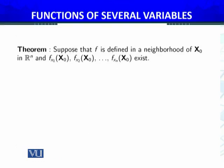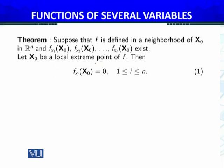The theorem states: suppose f is defined in a neighborhood of x₀ in ℝⁿ and all partial derivatives exist. Let x₀ be a local extreme point of f. Then all partial derivatives evaluated at x₀ must equal zero. We will now prove this.